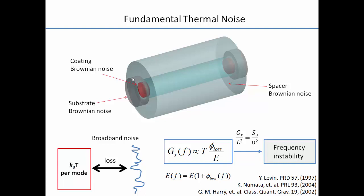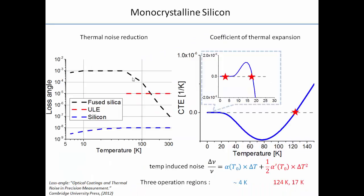A more effective way is to find a new material with intrinsically lower thermal noise floor. We find that crystalline silicon is the best candidate for the next generation of stable lasers, which should have stability at the 10⁻¹⁷ level. In terms of loss angle, silicon is an order of magnitude lower than ULE or fused silica, especially at low temperature — five or six orders of magnitude lower.